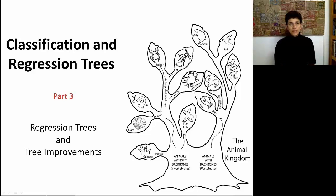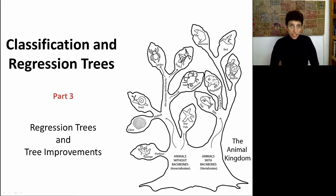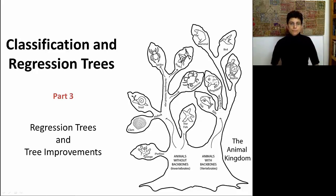Now that we've looked at classification and regression trees, let's look at some expansions. In particular, let's look at the regression trees part of CART, and then we'll look at a few tree improvements.